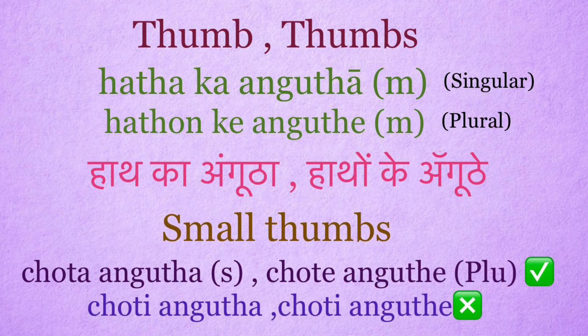Thumb: haath ka angootha. Thumbs: haathon ke angoothe. It's a masculine word. Small thumbs: right use is chota angootha (singular), chote angoothe (plural). Wrong use: choti angootha, choti angoothe.